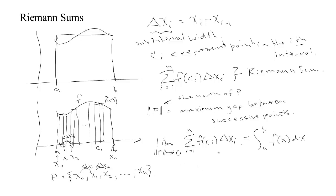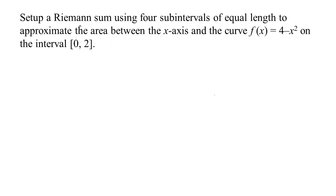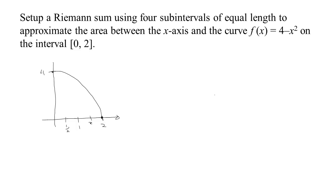Let's look at some examples of using Riemann sums to approximate — first with a fixed number of points. The problem says: set up a Riemann sum using four subintervals of equal length to approximate the area between the x-axis and the curve f(x) = 4 − x² on the interval 0 to 2. Here's the interval 0 to 2. When you plug 2 into the function you get 4 − 4 = 0, and when you plug 0 in you get 4. This function is a parabola opening down. We want to make 4 subintervals from 0 to 2, so we break it in half at 1, then in half again at 1/2 and 3/2. Now we have our four subintervals.